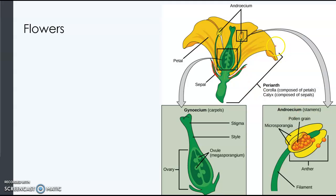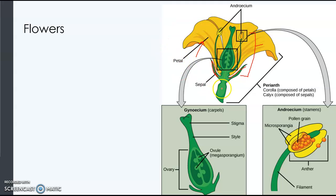We have the petals of the flower, which are designed to attract pollinators, and we have the male and female parts. The male parts — the entire structure — is called a stamen. The stamens or androeciums are the male structures, and they're going to contain an anther, which produces the pollen, and the filament is the stalk that attaches it to the flower.